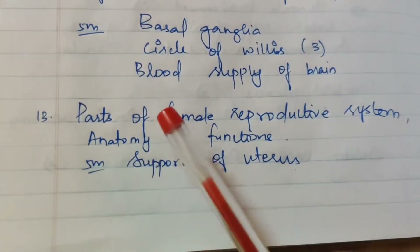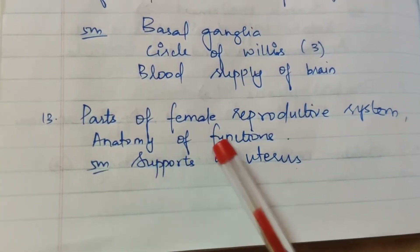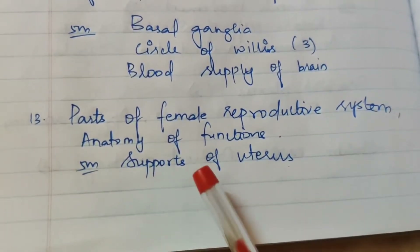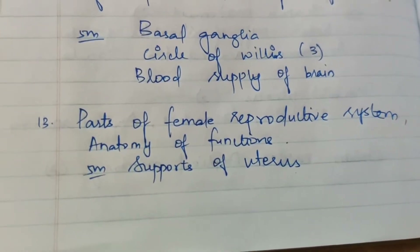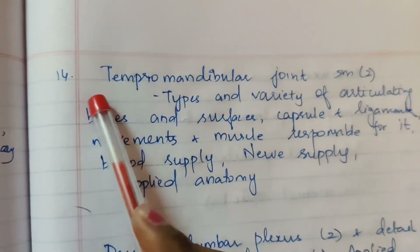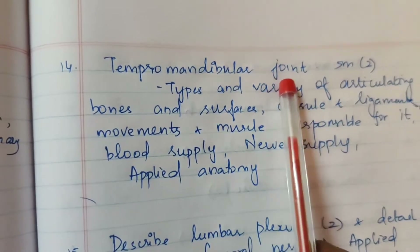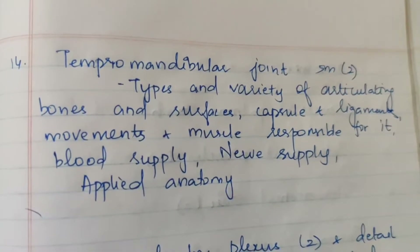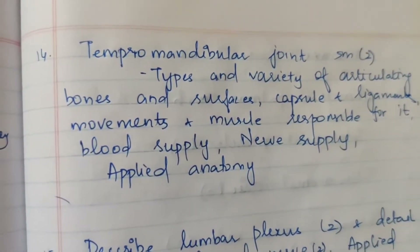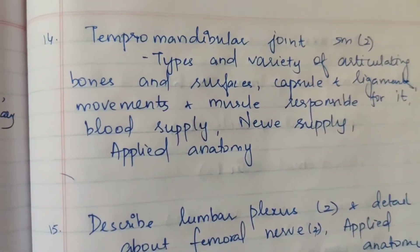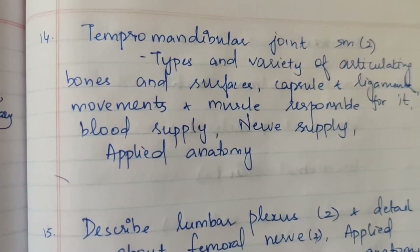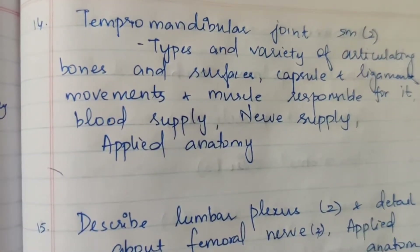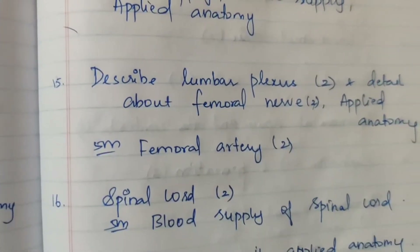Thirteenth question: parts of the female reproductive system and anatomy of functions — one 15-mark question. Five marks on supports of the uterus. Fourteenth question: temporomandibular joint — one 15-mark question, and five marks asked two times. Topics include: types and variety of articulating bones and surfaces, capsules and ligaments, movements and muscles responsible for it, blood supply, nerve supply, and applied anatomy.